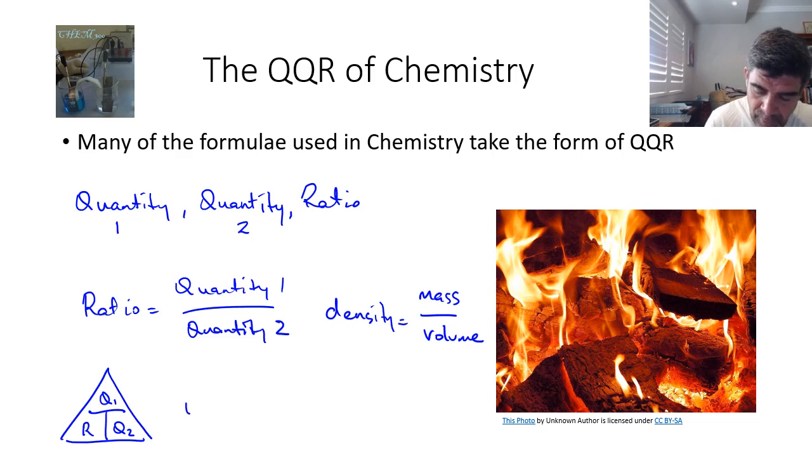It's also useful for finding units. So in the example that I just mentioned, density, the units of density would be mass, which may be in grams or kilograms, and volume, which may be in milliliters or liters. And therefore we know that the units for density must be grams per milliliter, or grams per liter, and so on.